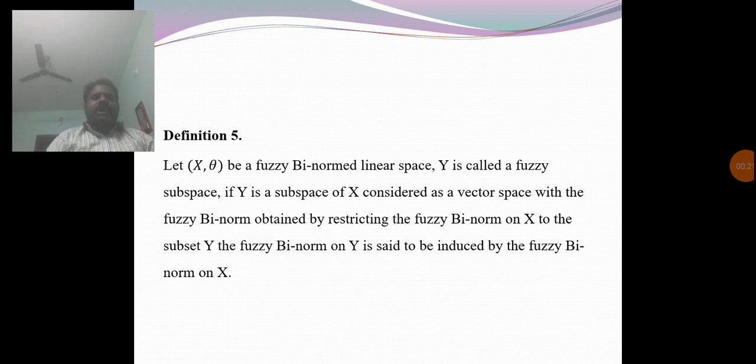Definition 5: Let X, theta be a fuzzy bi-normed linear space. Y is called a fuzzy subspace if Y is a subspace of X considered as a vector space with the fuzzy bi-norm on X restricted to Y. The fuzzy bi-norm on Y is said to be induced by the fuzzy bi-norm on X.